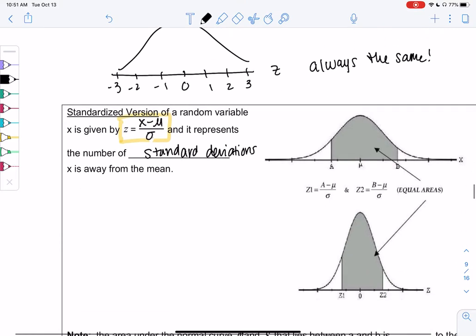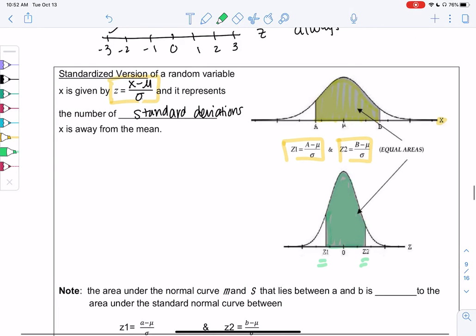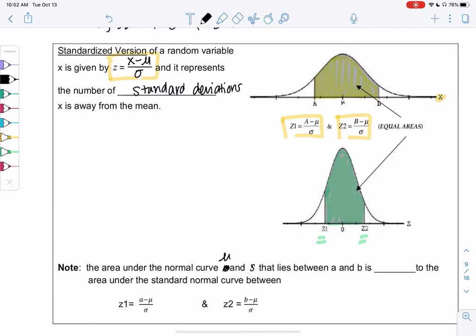And the reason this is really important is the area is actually the same. So if we find the area from A to B on the x curve, and then we find the corresponding z-scores, we can find the area between those two z-scores. So it just allows us to find probabilities and percents for any data set. So the area under the normal curve between mu and sigma that lies between A and B is the same or equal to the area under the normal curve where we have z1 is A minus mu over sigma. So that's my first z-score. And my second z-score is B minus mu over sigma. And so this is going to be a really nice property to make conclusions.